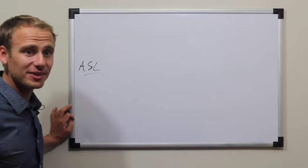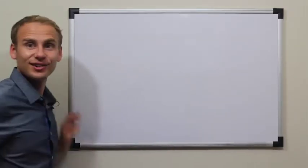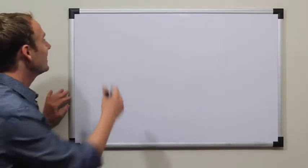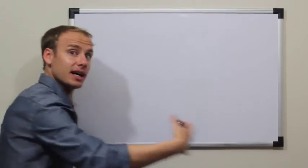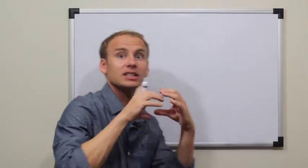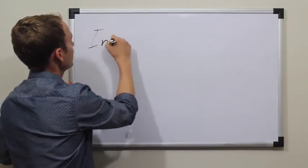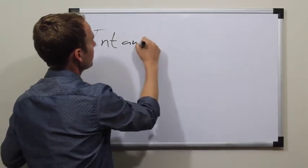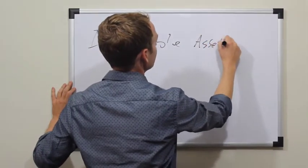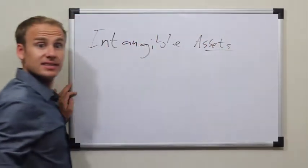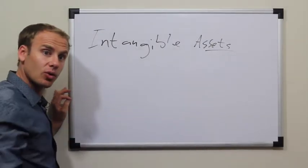Let's dive a little bit further into amortization expense. First of all, why do we have it? To understand amortization expense, you have to understand what needs to be amortized or expensed over time. We have intangibles — intangible assets — and these are what are going to be expensed over time, or amortized.